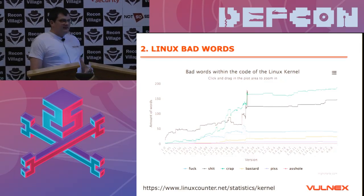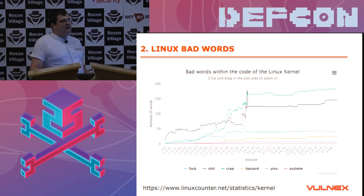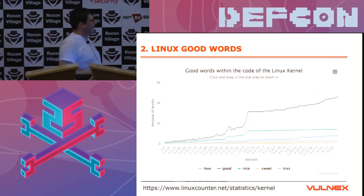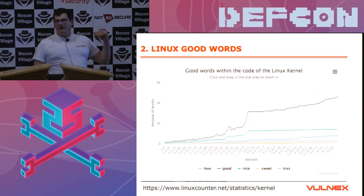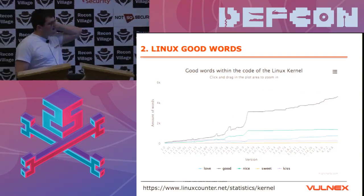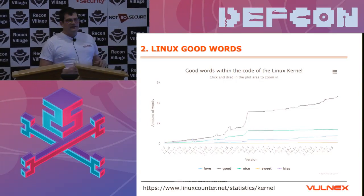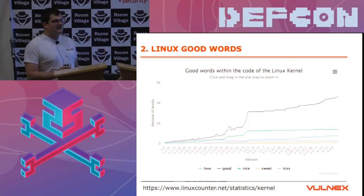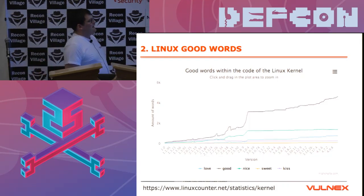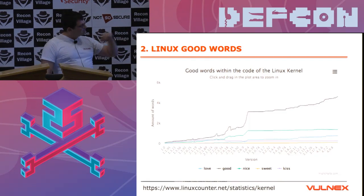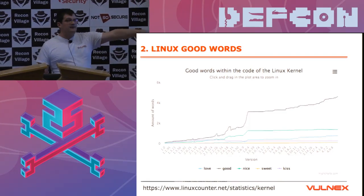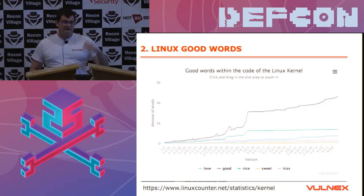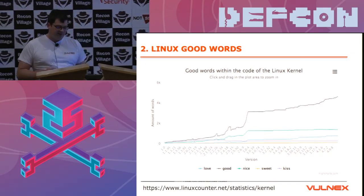But not everything is bad - it's not only bad words, you can also find good words. We have some 'love', some 'good nights' and 'treats' and 'kids'. But looking at both, we can see more angriness than happiness - we should be concerned about that. If you go to that URL you'll find more funny metrics like this one just related to the Linux kernel. So let's do the same for the repos we are working on.